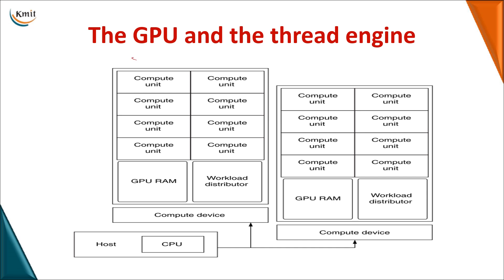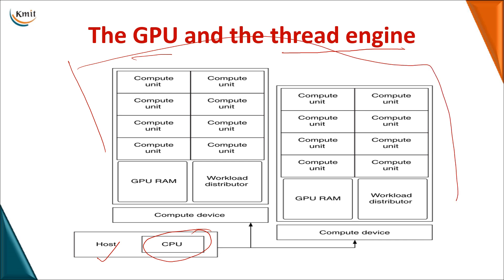Having seen the GPU and how the thread engine manages threads, we will now look at the internal architecture of a GPU. In this dedicated GPU setup, you have a CPU — also called the host — and the GPU. The GPU internally has two compute devices. A compute device is a sub-part, or sub-slice, of the GPU that helps in performing operations. Here I am taking an example of a GPU with two compute devices: Compute Device 1 and Compute Device 2.